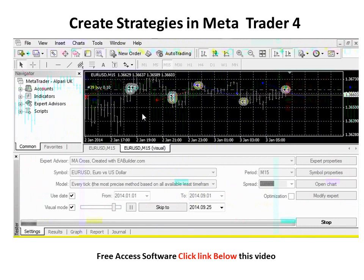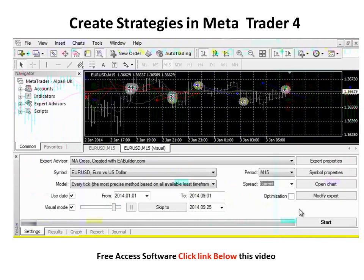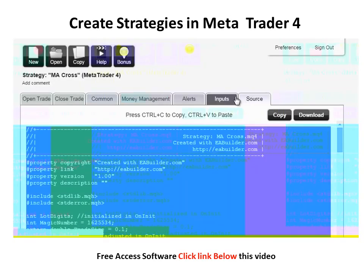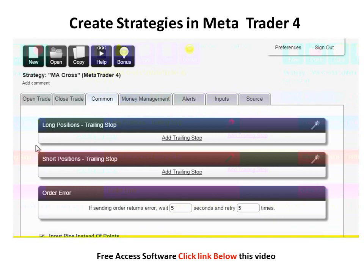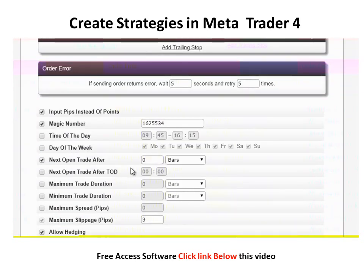What we see here is that the order is opened and closed multiple times in the same place — that's not what we want. The problem is that the price moves up and down, and the moving averages cross upwards and downwards multiple times inside a single bar. We will fix this by simply checking the option 'Next open trade after' — let's say 5 bars — and the minimum trade duration of 5 bars. The expert advisor will wait at least 5 bars before opening the next trade, or before closing the open position. We can run the tester again to see if it works.